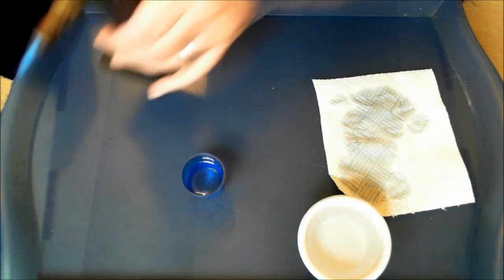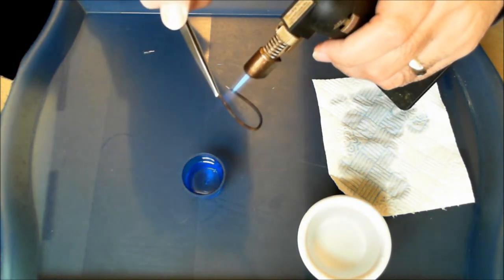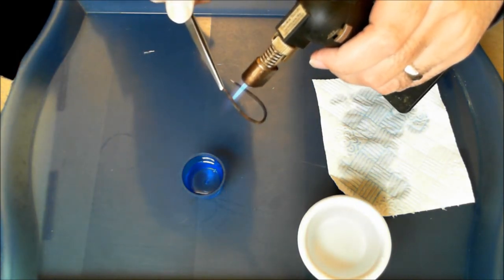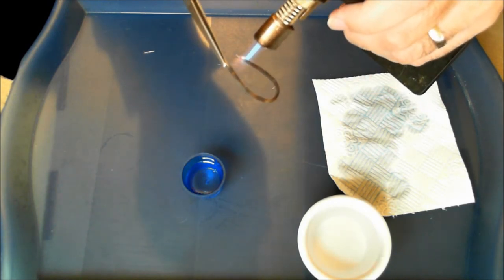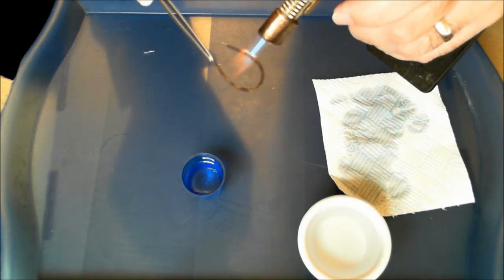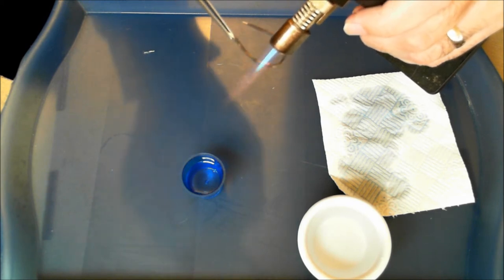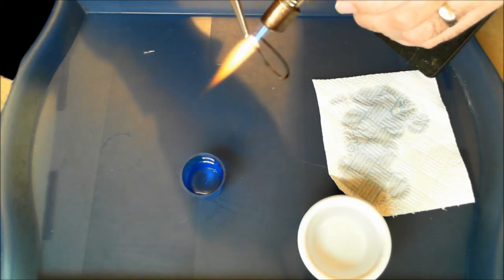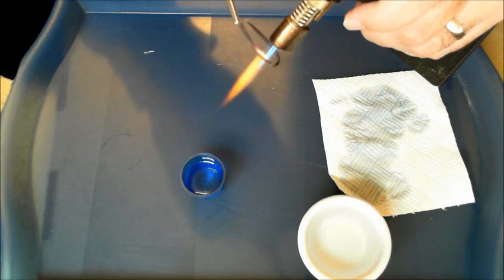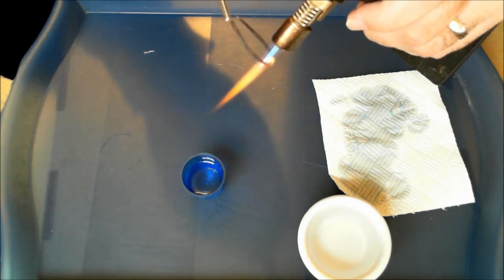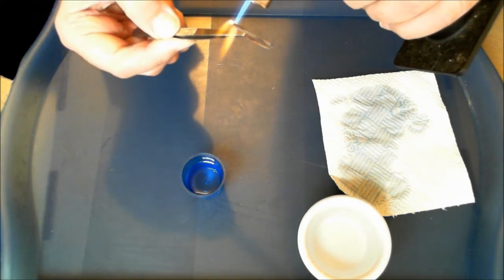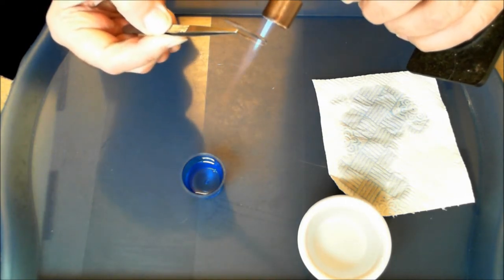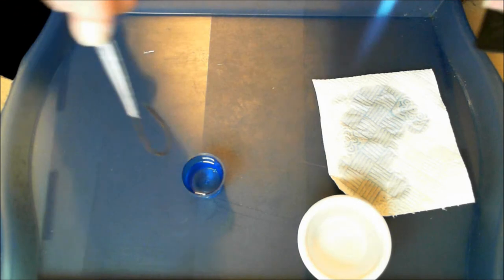And now we're just going to do the same thing again. We're doing this three times now, but this time when we have heated it, we're going to dunk it in the VG to quench. Again, this is another way so you don't have to drip it on and have it all spluttering at you. So there we go, that's one.